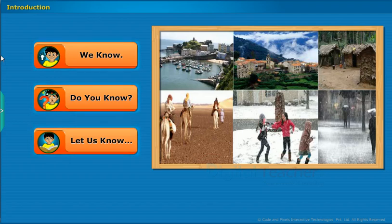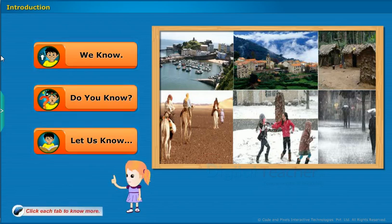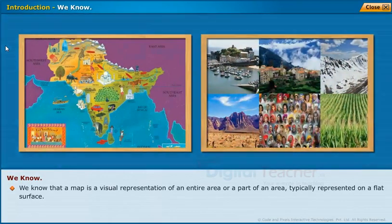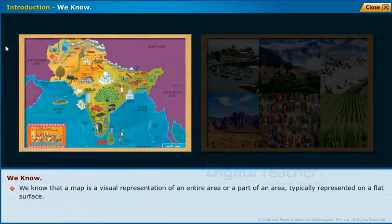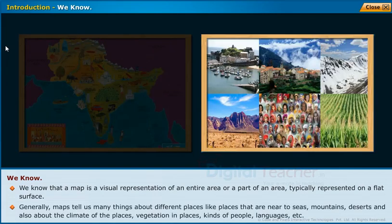Before entering into the chapter, follow the instructions shown on the screen and click each tab to know more. We know that a map is a visual representation of an entire area or a part of an area, typically represented on a flat surface. Generally, maps tell us many things about different places, like places near seas, mountains, and deserts, as well as climate, vegetation, kinds of people, and languages.